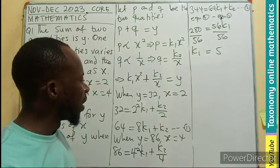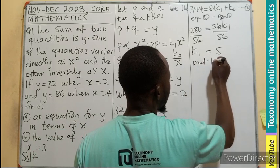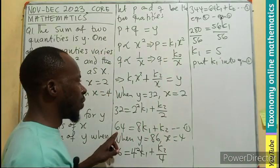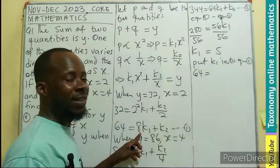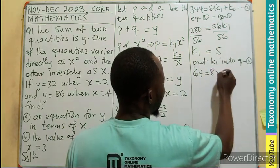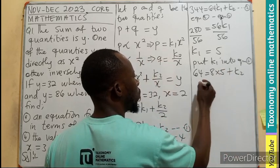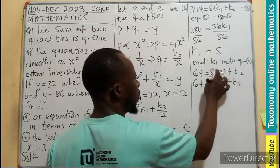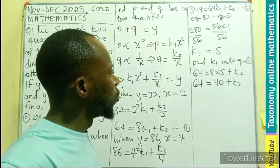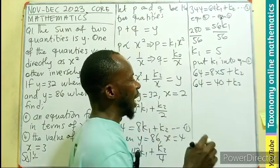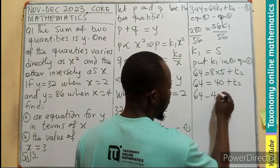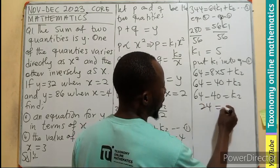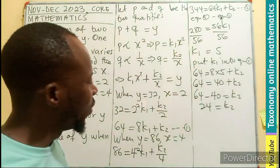So K1 is known. K2 is unknown. So let's put that. I can use equation 1 or equation 2. I'm picking equation 1. So 64 equals 8 times K1. So that would be 8 times 5 plus K2. So we have 64 equals 40 plus K2. Don't forget 8 times 5 is 40. So we are going to do subtraction of 40 from both sides. So 64 minus 40 equals K2. And that would give us 24 equals K2. So K1 is known. K2 is known.